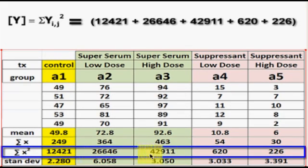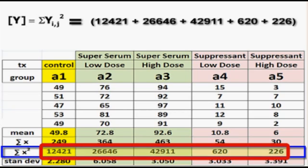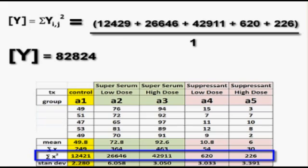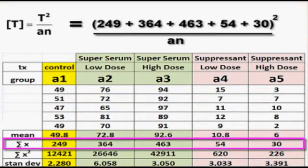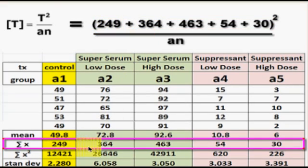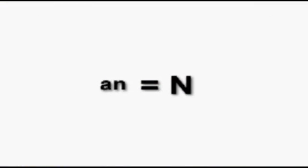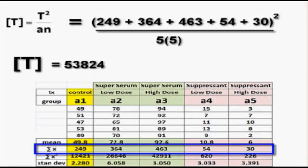To calculate the Y bracket term, take each of those sum-of-squares numbers and add them all up, then divide by 1, because the Y bracket term stands for the individual. The T bracket term stands for total — T for total. We take the total sum for everybody: we took the total of each column, added them all up, squared it, and divided by the total number of rats in our study, or A times n. A is the number of groups, and little n is the number of rats per group, which also equals capital N, or 25 total rats.